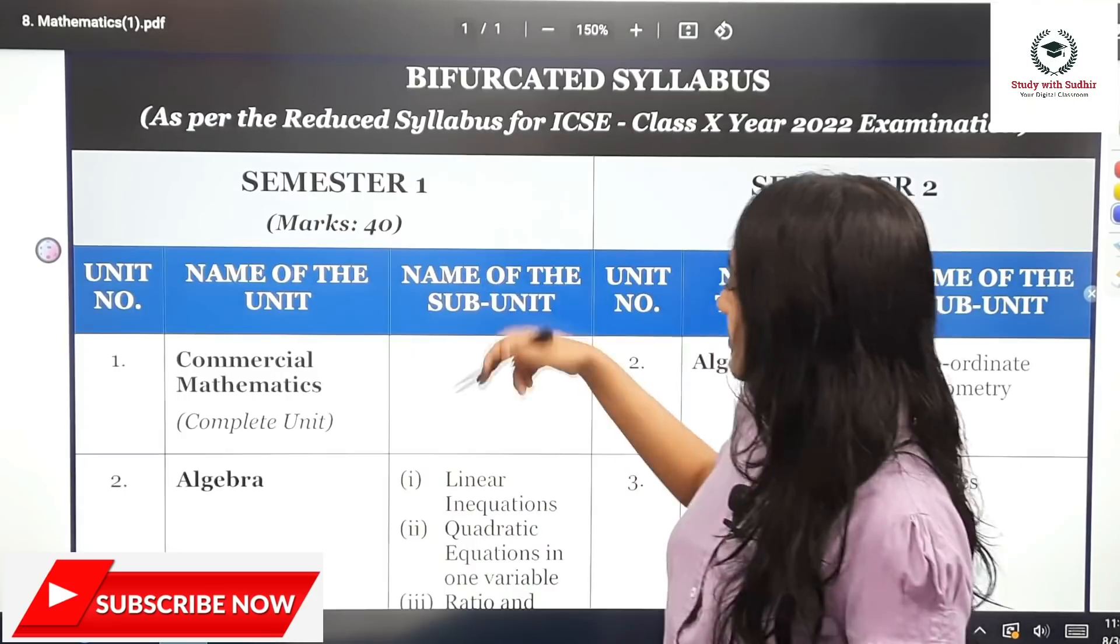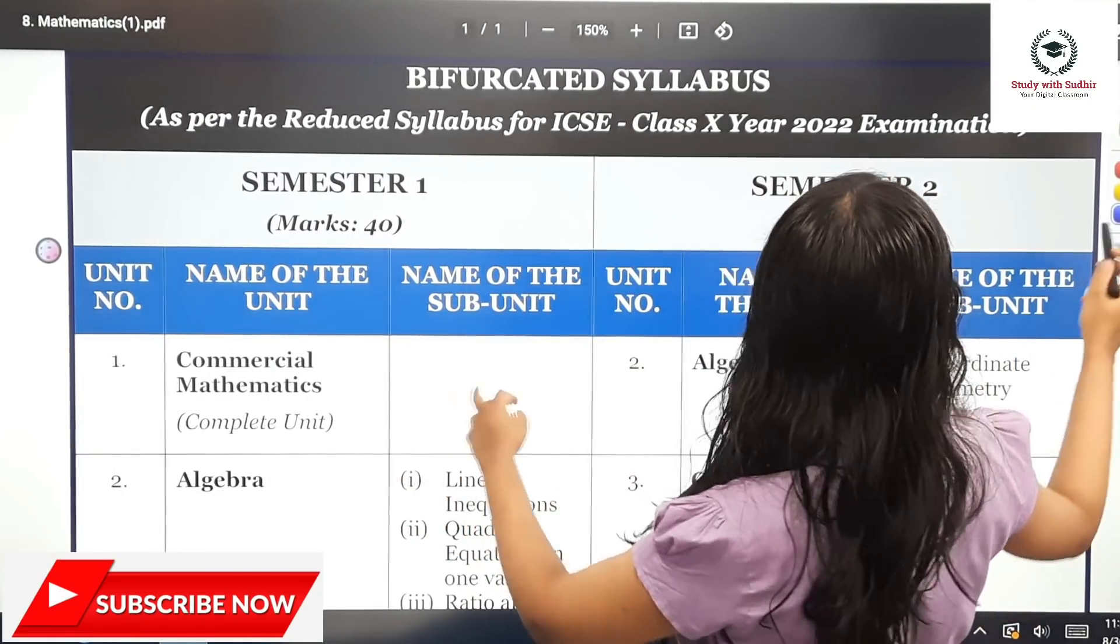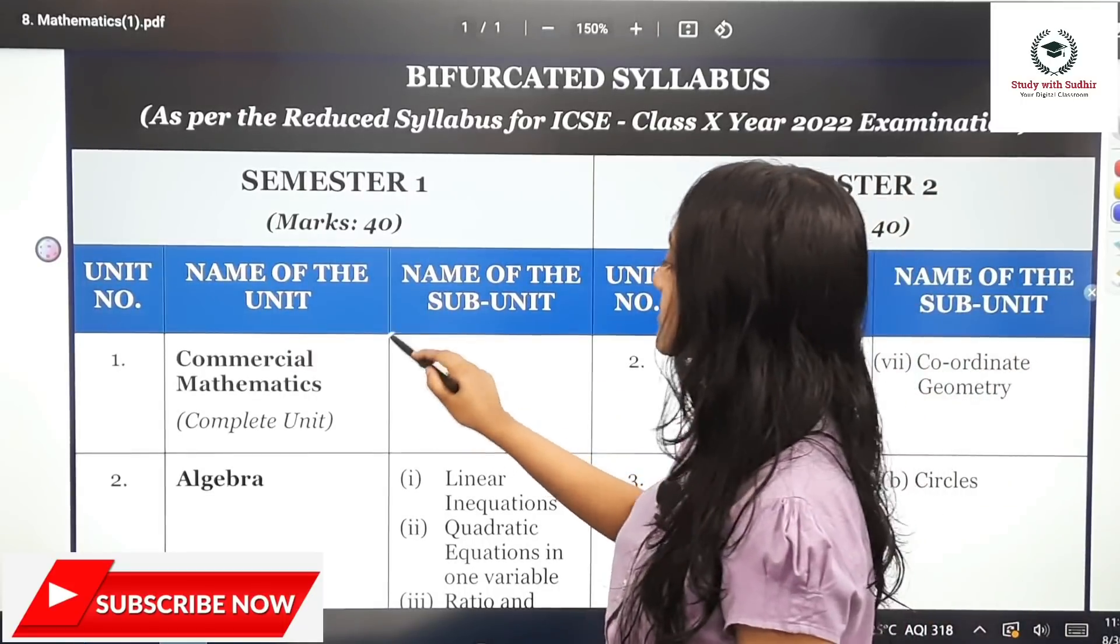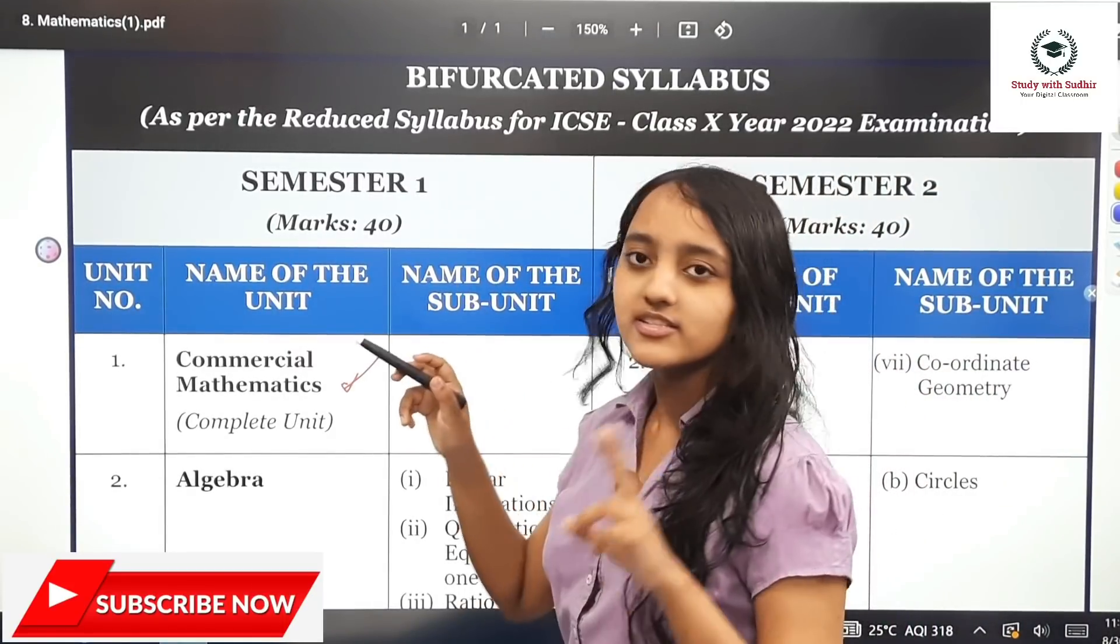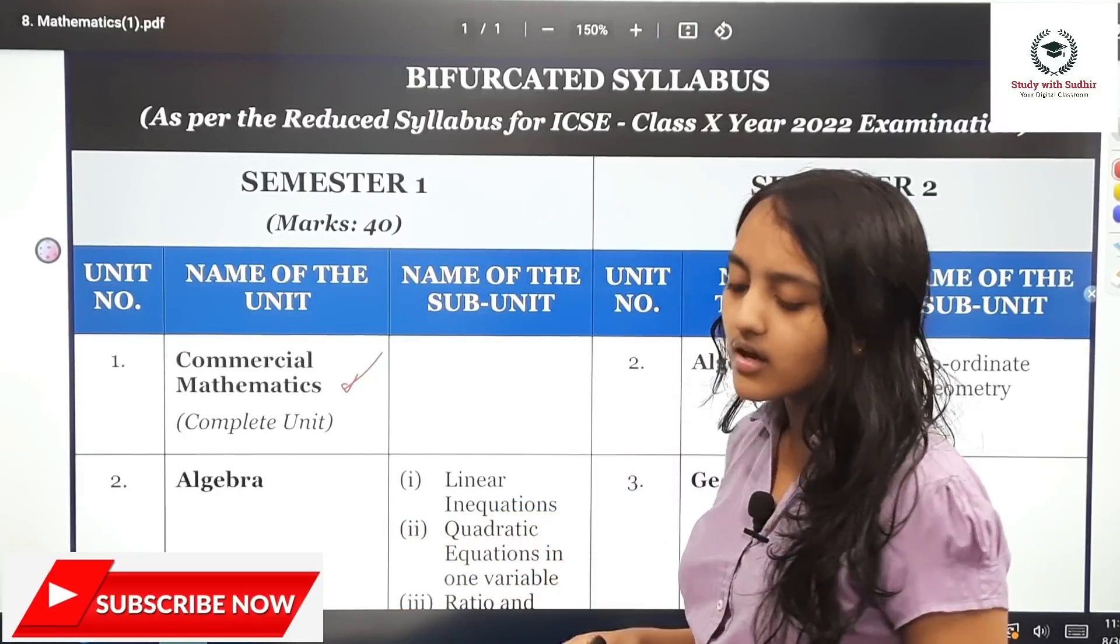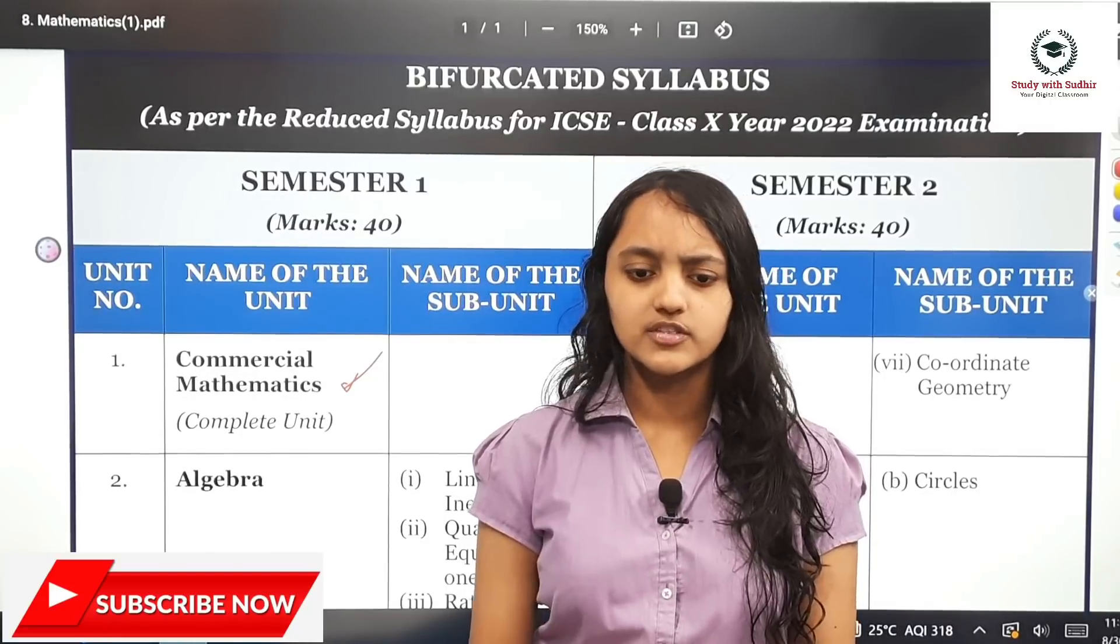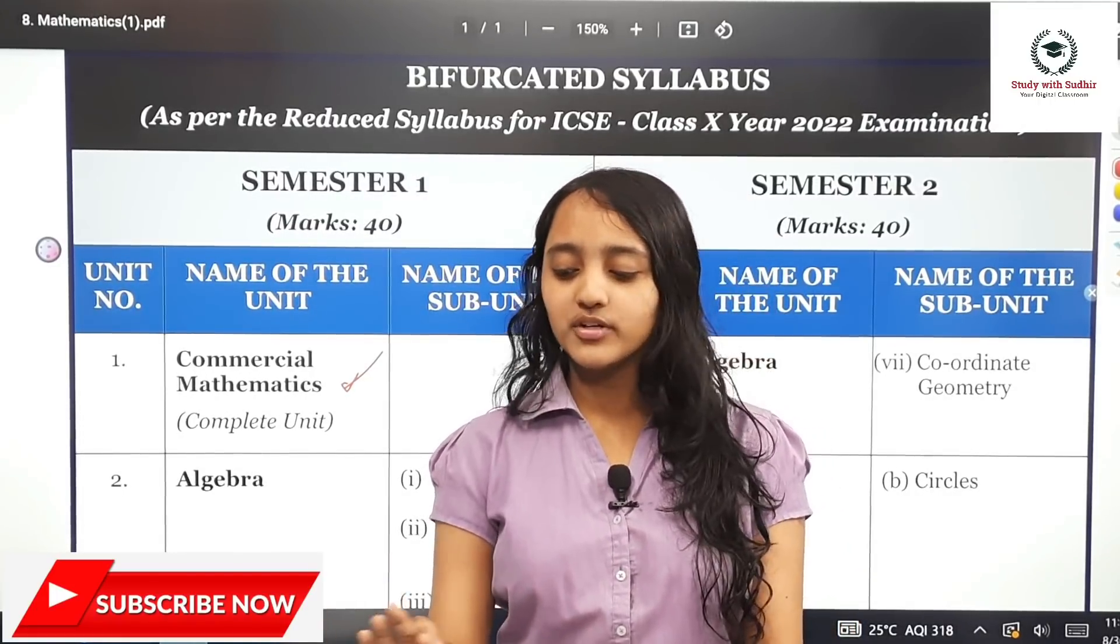This is the syllabus for semester one for the mathematics paper. The first unit is commercial mathematics, which has two chapters: GST and banking. Both GST and banking are very formula based chapters. You need to know the formula and you will get the answer.